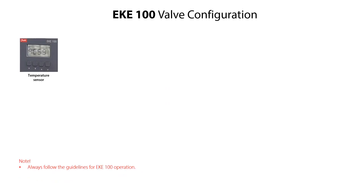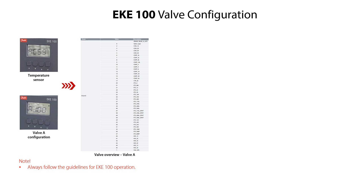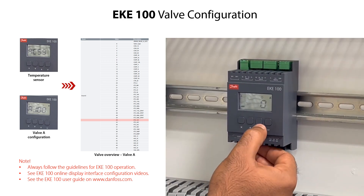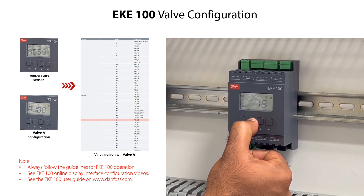We then have to do the EKE100 valve A configuration by selecting the ETS12C stepper motor valve. From the AC59 mode, press the arrow down key to access the valve A configuration, specified as AJ00. Press the enter key to access the available valves. Press the arrow up or down keys to find and select the needed valve. Select 29 corresponding to an ETS12C valve. Press the enter key to confirm the value and return to the AJ00 mode.